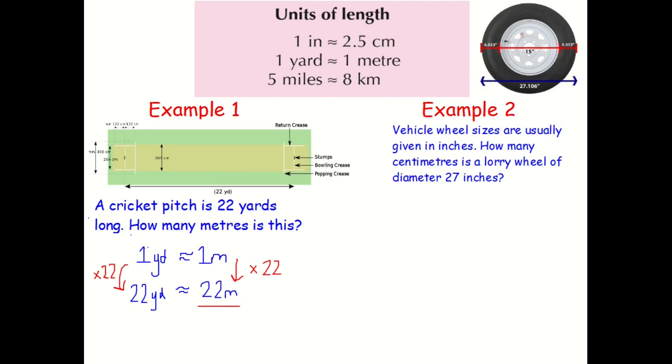Okay, example number two. It says vehicle wheel sizes are usually given in inches. How many centimetres is a lorry wheel of diameter 27 inches. Okay, so I've got a little picture here. Diameter is all the way across the circle here. And you can see here it says 27. I've just said 27 just to keep it simple for today. But you can see it says 27.106 inches. There's a little speech mark symbol there which means inches.